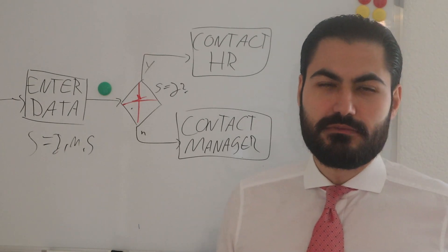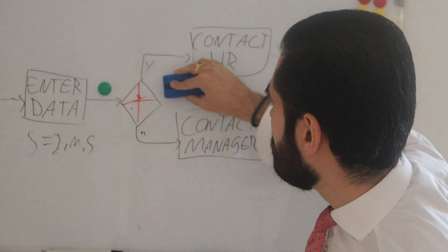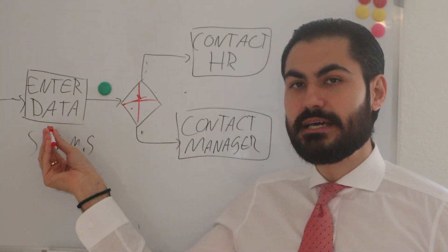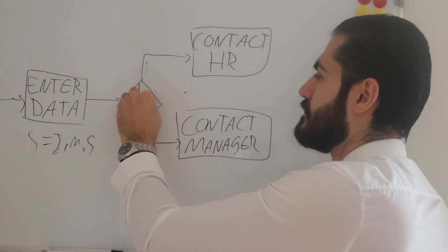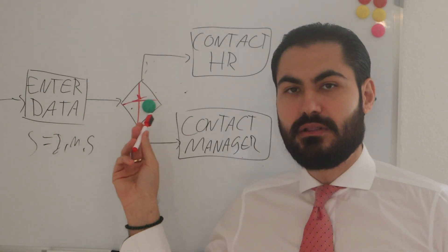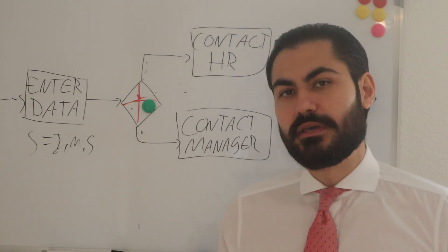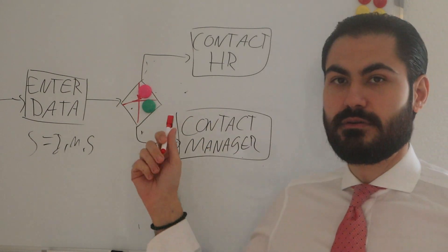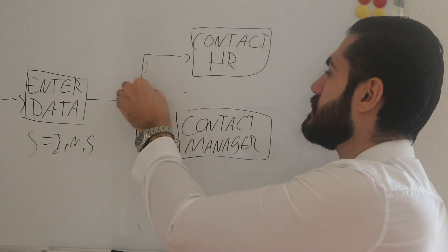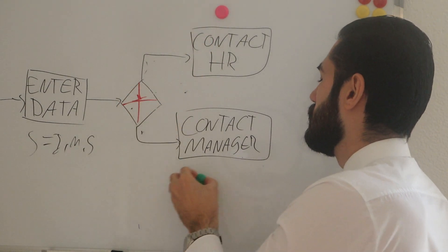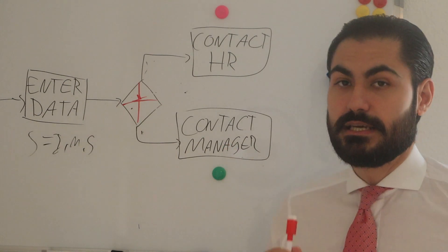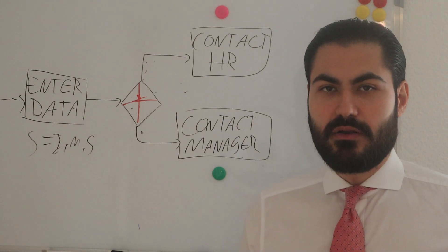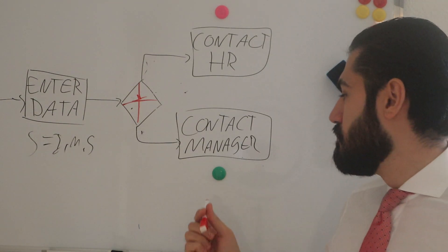We can remove the condition, because what happens now is: as soon as we enter the data and the token reaches the parallel gateway, the magic happens — it duplicates the token. Instead of one token, we now have two tokens created by the process. One token goes up and one goes down to the activities.